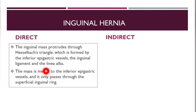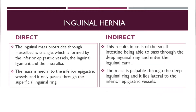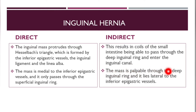In direct hernia, the mass is medial to the inferior epigastric vessels and only passes through the superficial inguinal ring. In indirect hernia, coils of small intestines are able to pass through the deep inguinal ring and enter the inguinal canal; the mass is palpable through the deep inguinal ring and lies lateral to the inferior epigastric vessels.